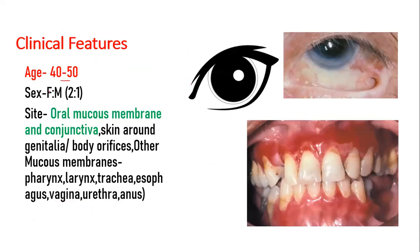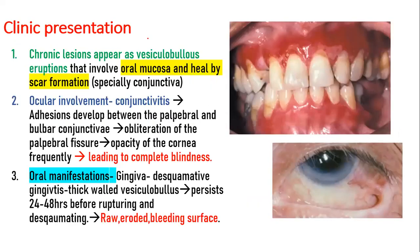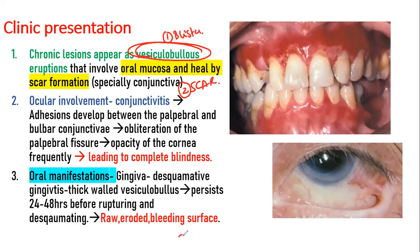Clinically, cicatricial pemphigoid appears in the age group of 40 to 50 years, more common in females. The most common sites of occurrence are the eyes and the oral mucosa. Other surfaces include pharynx, larynx, trachea, esophagus, vagina, urethra, and anus. Initially there is a vesiculobullous eruption — a blister — which heals by scar formation. The word 'cicatricial' means scar, which is why cicatricial pemphigoid indicates healing by scar.